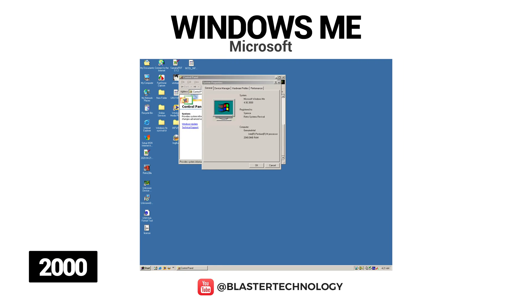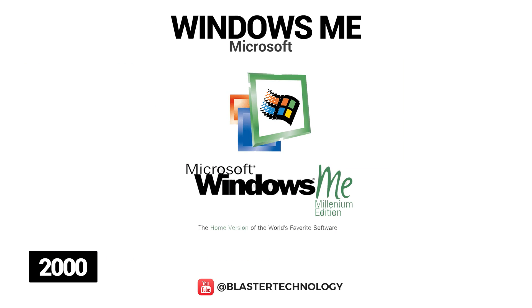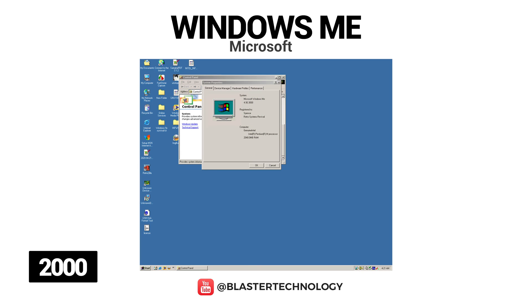Also in 2000, Windows ME, Millennium Edition, was released — later nicknamed the Mistake Edition — because users reported a multitude of problems with its installation and operation. It did introduce system restoration that could remove and restore certain updates following a faulty installation of a program.